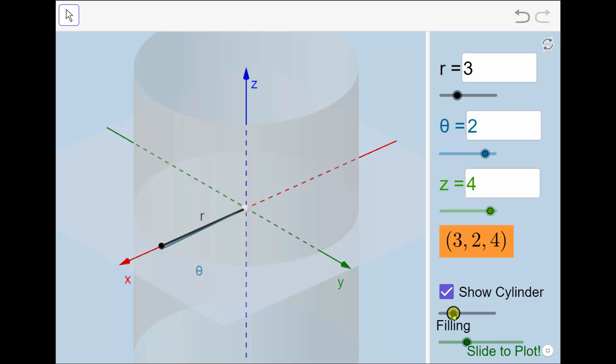r equals three also defines this cylinder in which the point will be on. Next, theta equals two, which is the angle counterclockwise from the pole or positive x-axis.